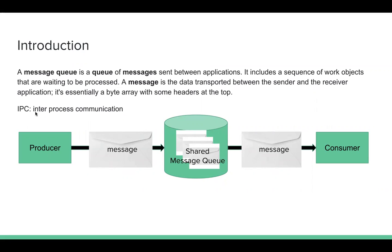Message Queue can be used for IPC — inter-process communication. When there's a producer, there's a consumer. There are two processes — they can be in the same instance or in different instances, but they communicate via Message Queue. A producer can create some messages and send them to this shared message queue, and the consumer can pull messages from this message queue and process them.